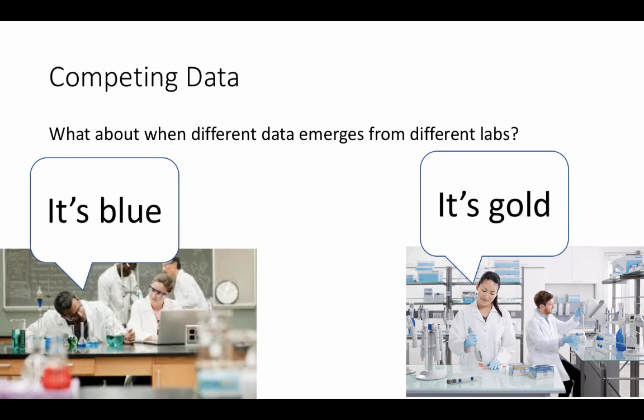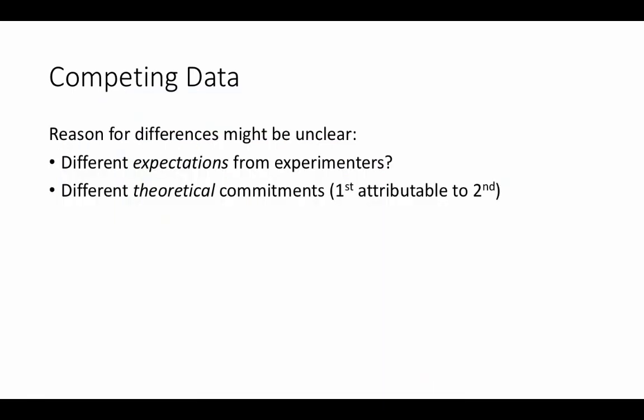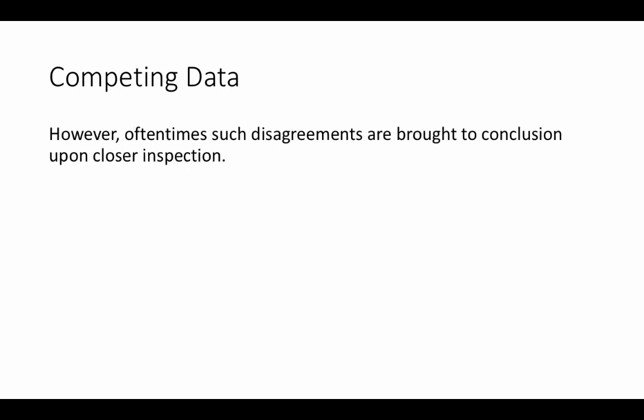Sometimes different data emerges from different labs. What do you do when different data emerges from different labs? The differences might be because experimenters had different expectations or different theoretical commitments. Sometimes, though, upon closer inspection these disagreements are brought to conclusion — both labs will share their data, communicate with each other, see where the discrepancies were, reevaluate, and come to an agreement. The fact that scientists initially disagree on something isn't a reason for skepticism; the skepticism often gets resolved upon further inspection.